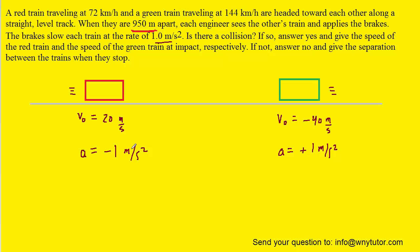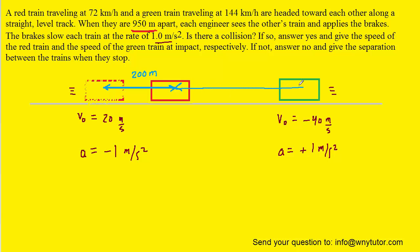To figure out the speeds of the trains at this collision, we realize that because the red train is moving slower, it would certainly stop first before the green train ever had a chance to do that. We figured out that when the red train stops, it has moved 200 meters. So we take the red train and move it up 200 meters. Now the red train and the green train are 750 meters apart — because the initial separation was 950 meters, and since the red train has moved forward by 200, they are now only 750 apart.